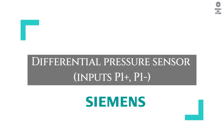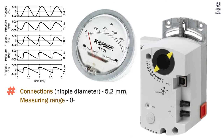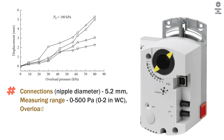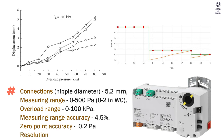Differential pressure sensor connections: nipple diameter is 5.2 mm. Measuring range is 0 to 500 Pascals. Overload range is 0 to 100 kiloPascals. Measuring range accuracy is 4.5%. Zero point accuracy is 0.2 Pascals. Resolution is 12-bit.